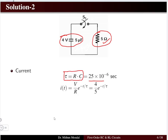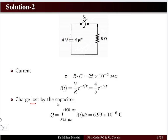Tau = R × C = 25 × 10⁻⁶ seconds, where the 10⁻⁶ comes from microfarad. The natural response current formula is i = (V/R) × e^(−t/τ). With initial voltage 4 volts and R = 5 ohms, current = (4/5) × e^(−t/τ). The charge lost by the capacitor is the integral of current from 25 microseconds to 100 microseconds.